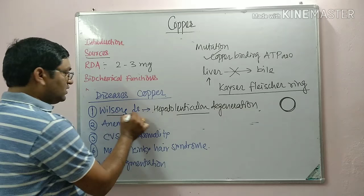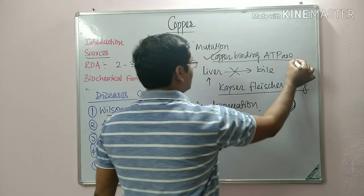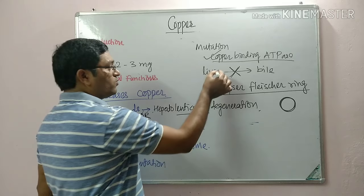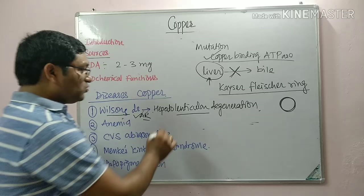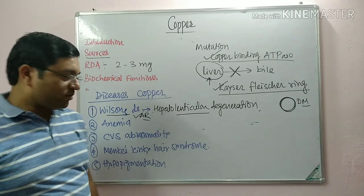Wilson's disease is an autosomal recessive disorder. Due to the mutation in copper-binding ATPase, there is a defect in secretion of copper from the liver to the bile, causing blockade in excretion of copper. This leads to accumulation of copper in the liver and later in the lenticular nucleus of the brain — hence the name hepatolenticular degeneration. The characteristic deposit in the Descemet's membrane of the cornea results in the formation of the Kayser-Fleischer ring.